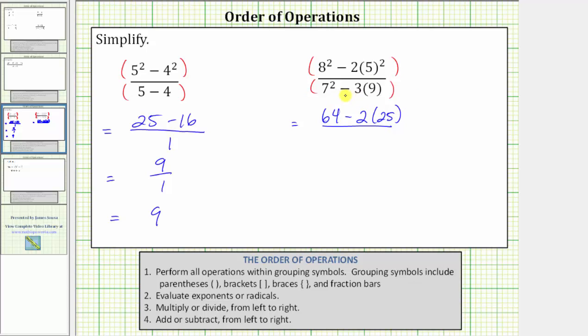Now looking at the denominator, again, we simplify the exponents first. Seven squared equals 49. The denominator simplifies to 49 minus three times nine.